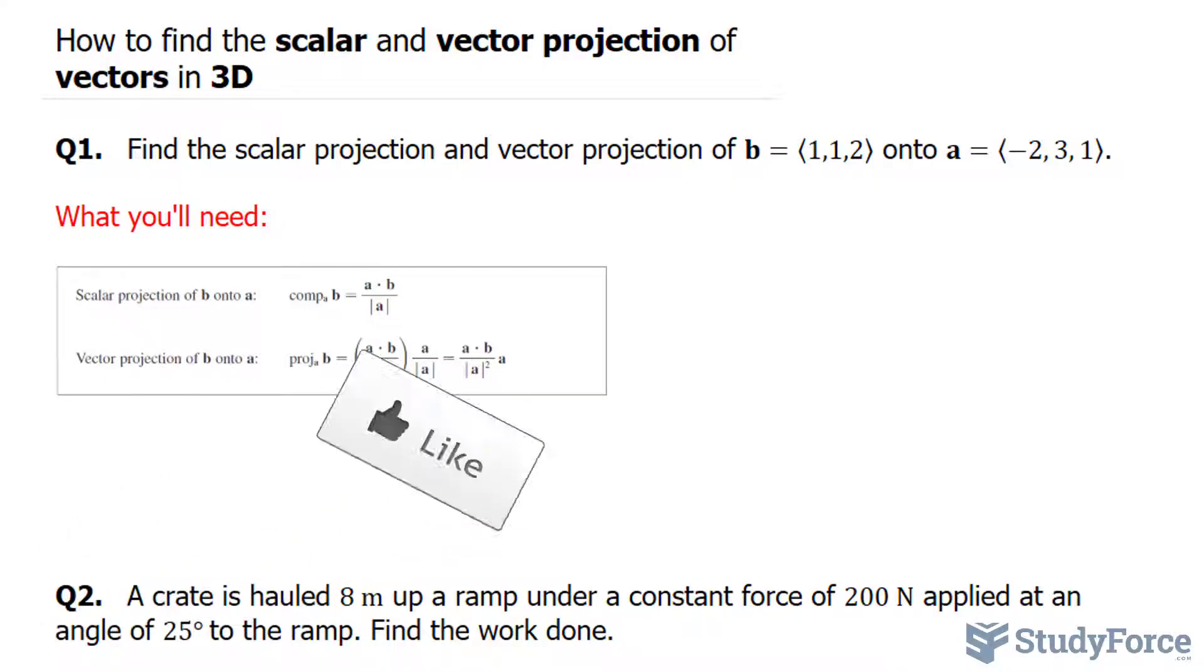We have 1 times negative 2, that's negative 2. 1 times 3, that's positive 3, and 2 times 1, that's equal to 2. This gives us a sum of positive 3. So we just found the dot product of A and B.